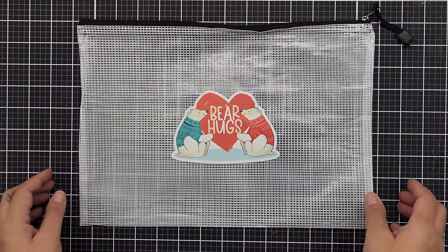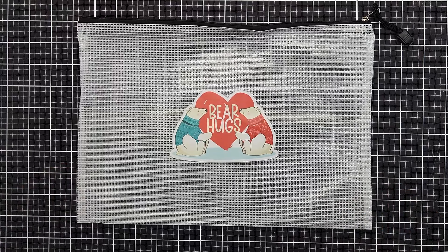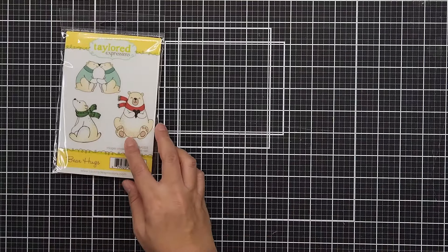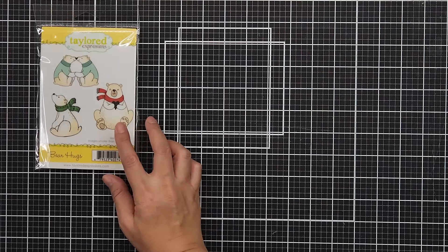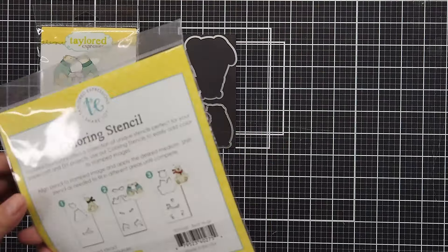Let's go over the products that I will be using for this project. Here is the adorable zipper pouch that comes with the kit, it's perfect for holding everything together. The adorable Bear Hug stamp and coordinating dies, the Bear Hugs coloring stencils.